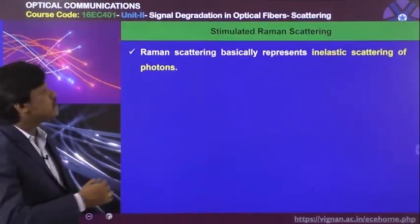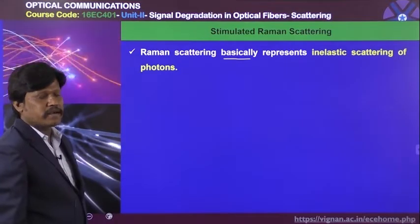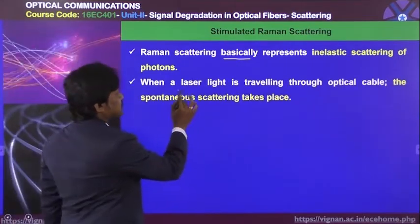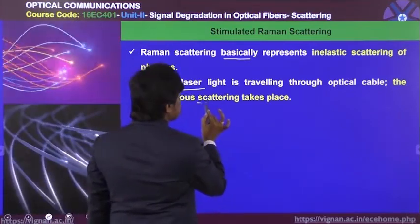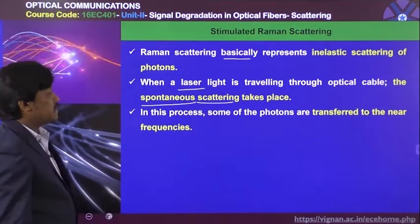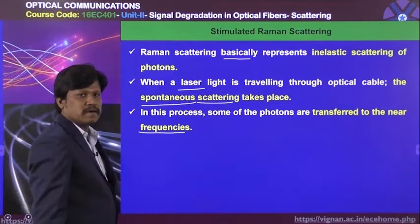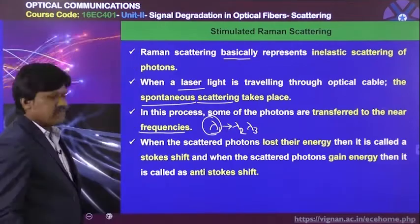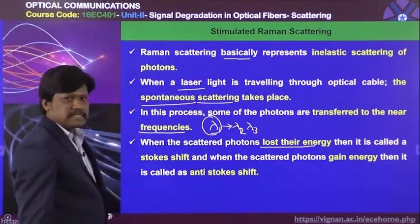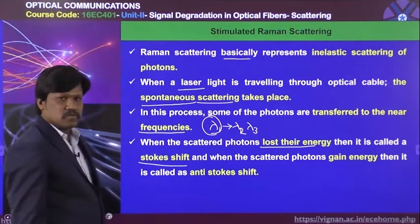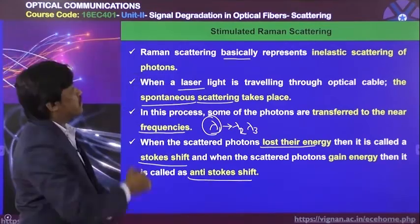The next type is stimulated Raman scattering. Stimulated Raman scattering basically represents inelastic scattering of photons. When the laser light is travelling through the optical fiber cable, spontaneous scattering takes place. In this process, some of the photons are transferred to near frequencies. When the scattered photons lose their energy, this is called a stokes shift. When the scattered photons gain energy, it is called an anti-stokes shift.